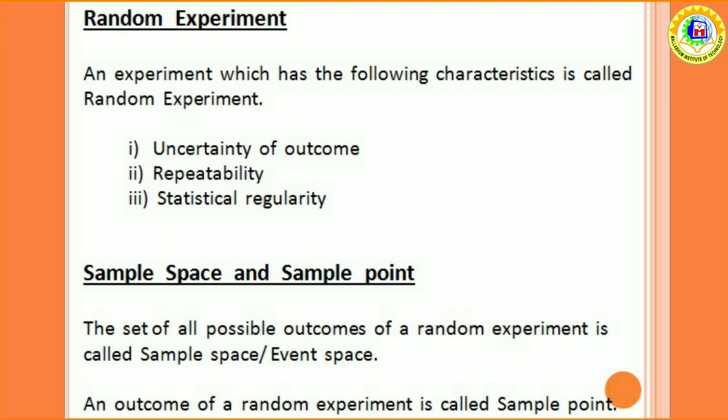Third is statistical regularity. Though the outcome is uncertain, yet there is regularity in the long run. If the experiment repeated n times and a particular outcome occurs m times, then the ratio m by n tends to a finite value as n tends to infinity.